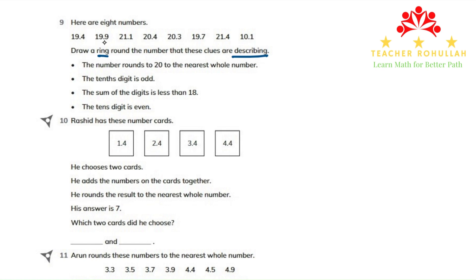the numbers that round to 20 are 19.9, 20.4, 20.3, and 19.7. The others do not round to 20. So one of these numbers can be the correct number.